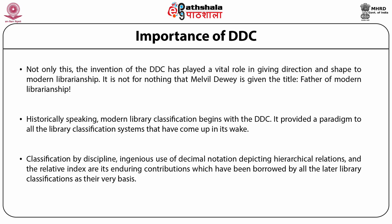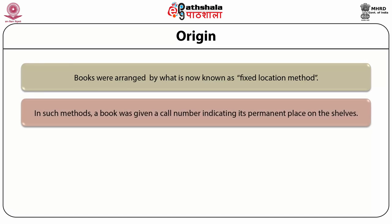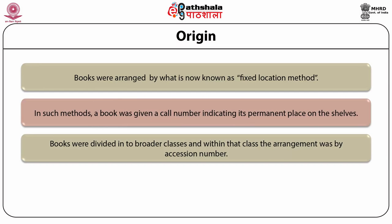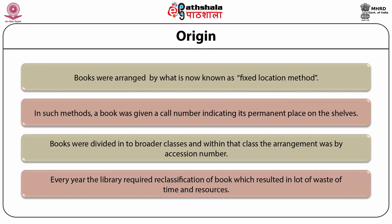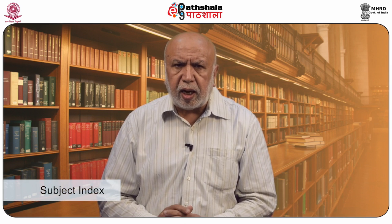This DDC classification has influenced the management of modern libraries in many ways. Before Melville Dewey, books were arranged by what is now known as fixed location methods. In such methods, a book was given a call number indicating its permanent place on the shelves. Books were divided into broader classes and within that class the arrangement was by accession number. Every year the library required reclassification of books which resulted in a waste of time and resources. In fact, it was the place where the book was given or placed, not mostly the content of the book.